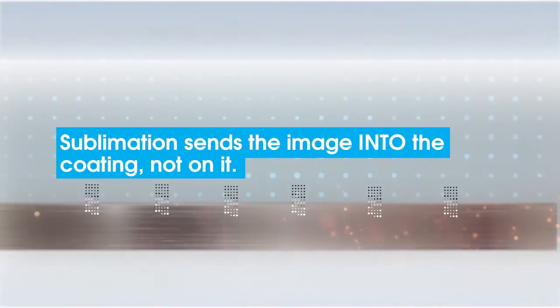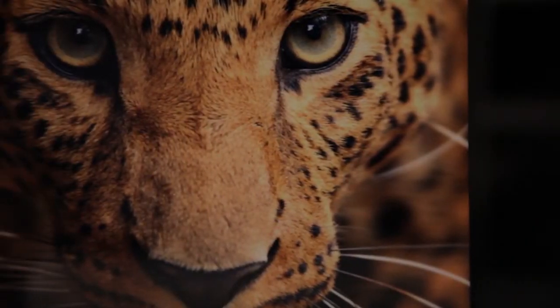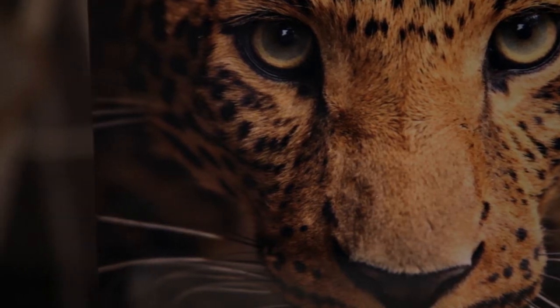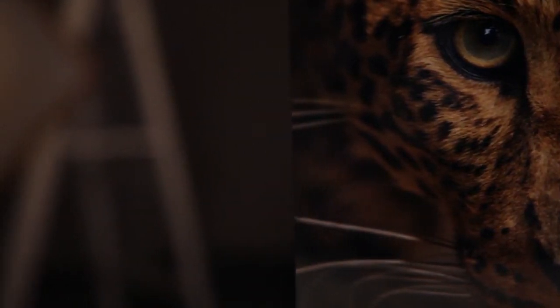This will literally send the image into the coating, not on it, and is what makes Chromalux metal prints so durable, vibrant, and allows for the three-dimensional HD look photographers love.